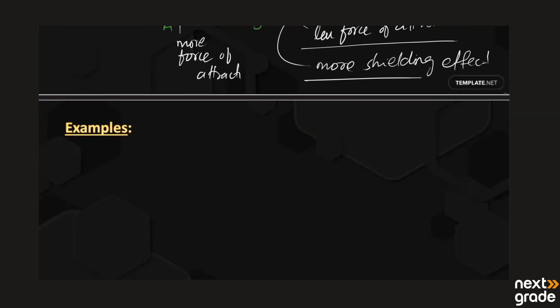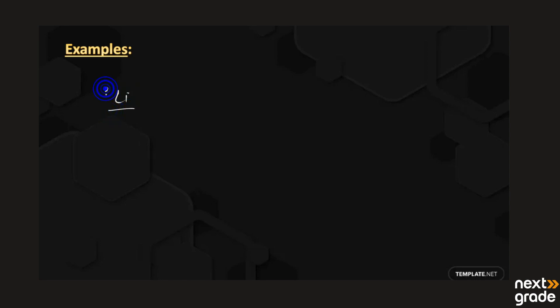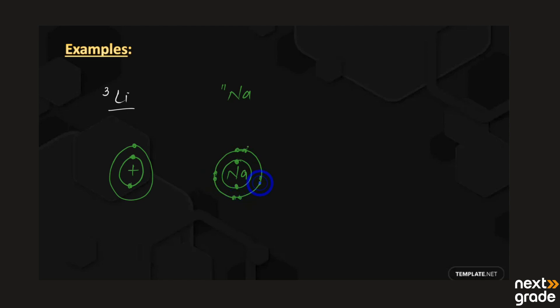Now let's look at examples from the periodic table. In group 1A, we have lithium with atomic number 3. For sodium, its atomic number is 11 — the first shell has 2 electrons, the second shell has 8 electrons, and the last shell has 1 electron.